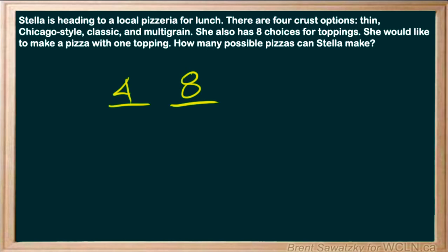In order to build our pizza, we need to choose a crust and we need to choose a topping. The 'and' indicates that this is a Fundamental Counting Principle problem, and the 'and' can be replaced with multiplication. So four times eight is 32.